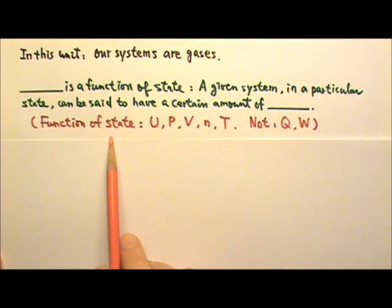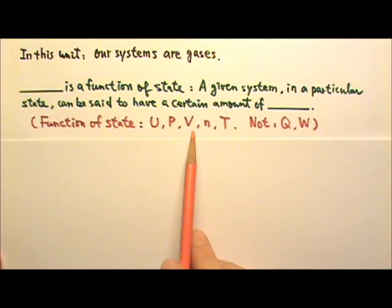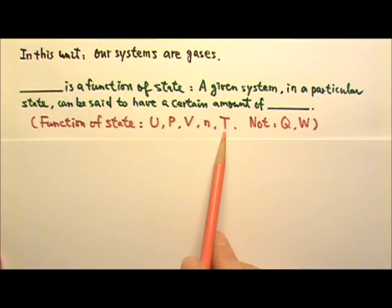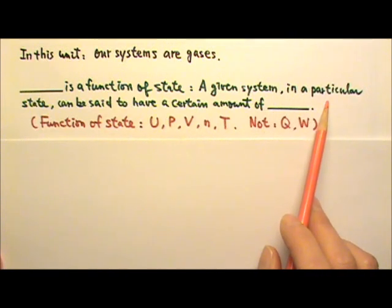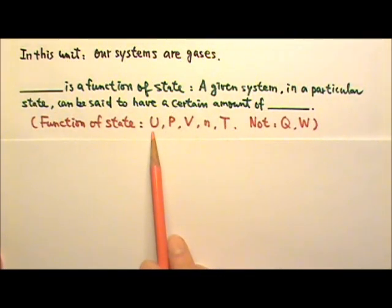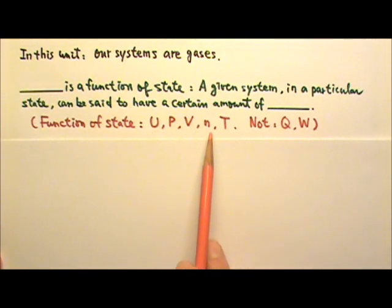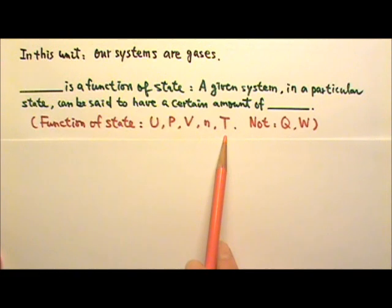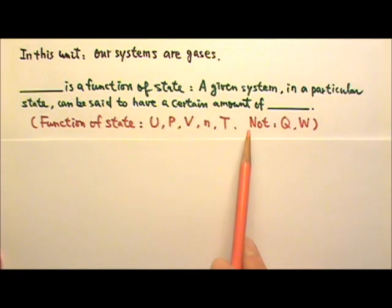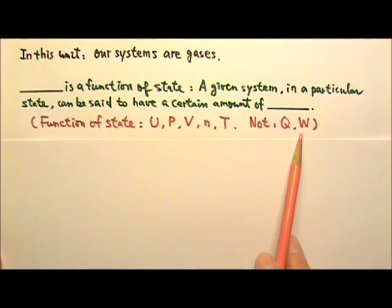Examples of functions of state include the internal energy U, pressure P, volume V, the number of moles n, and temperature T. So a given system in a particular state can be said to have a certain amount of internal energy, a certain amount of pressure, volume, a certain number of moles, and a certain temperature. On the other hand, the heat added to a gas Q and the work done on the gas W are not functions of state.